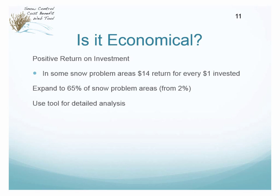As part of that research, we recommended that they expand the program to about 65 percent of snow problem areas, just based on the statewide assessment of costs and benefits. Currently, there's about 2 percent of the areas protected by all snow control options. We also recommended that there needs to be a detailed analysis for each site, because every site is so specific with the conditions, the fetch, how much snow is blowing, what kind of maintenance is done — does it have a drifting problem?